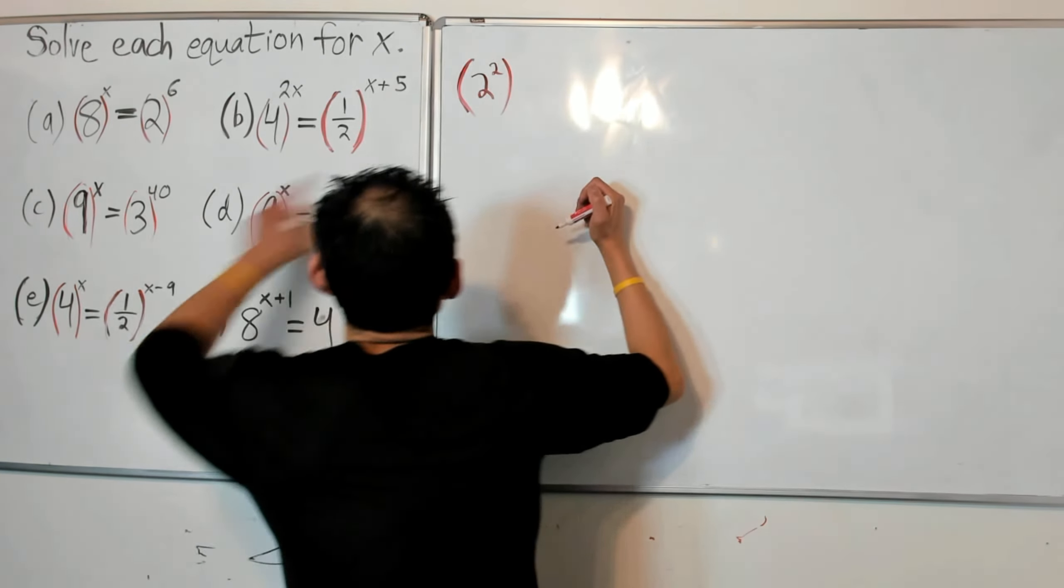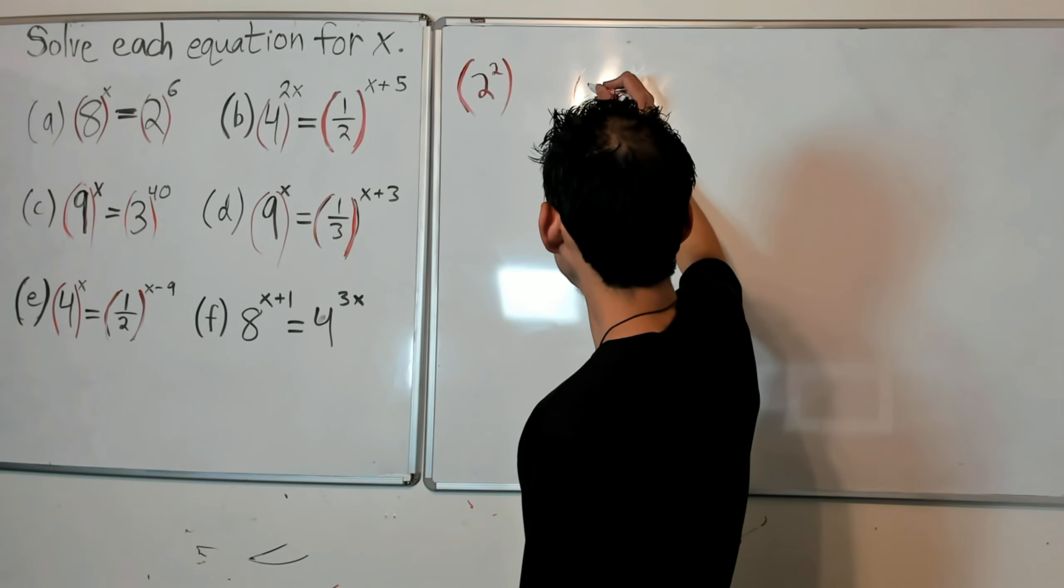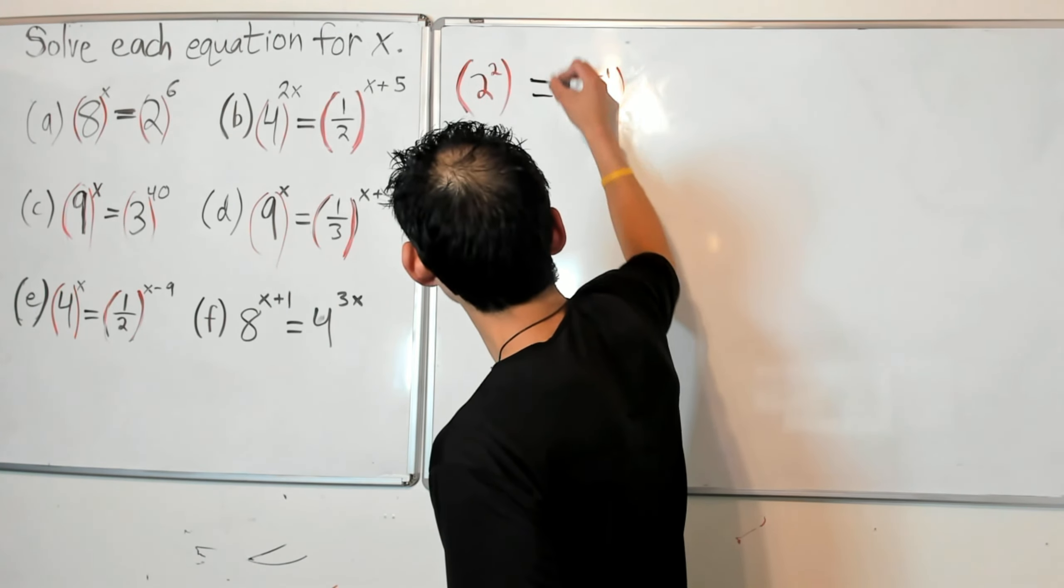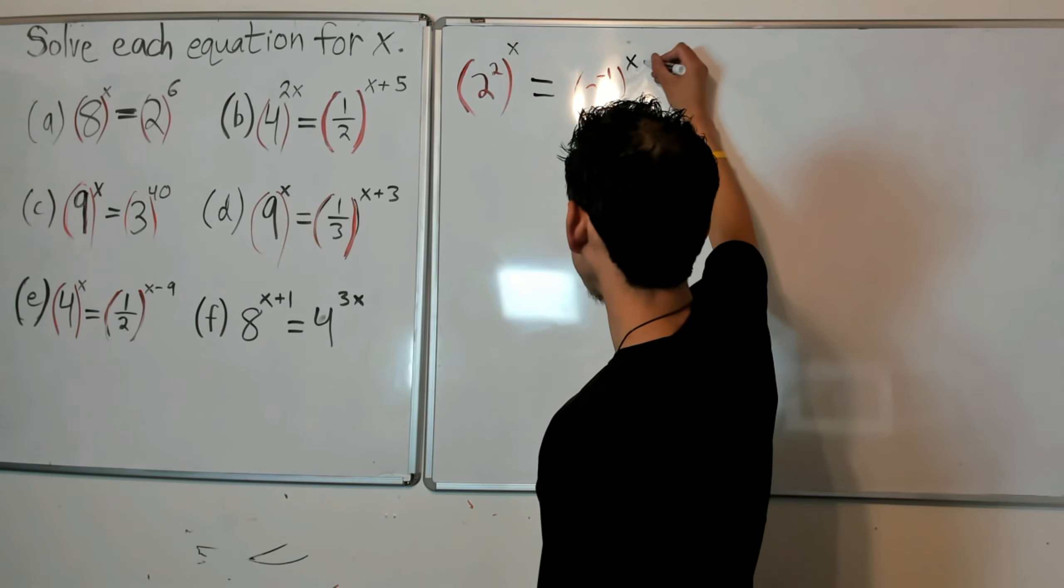Alright, 4 is the same as 2 squared. 1/2 is the same as 2 to the negative 1.